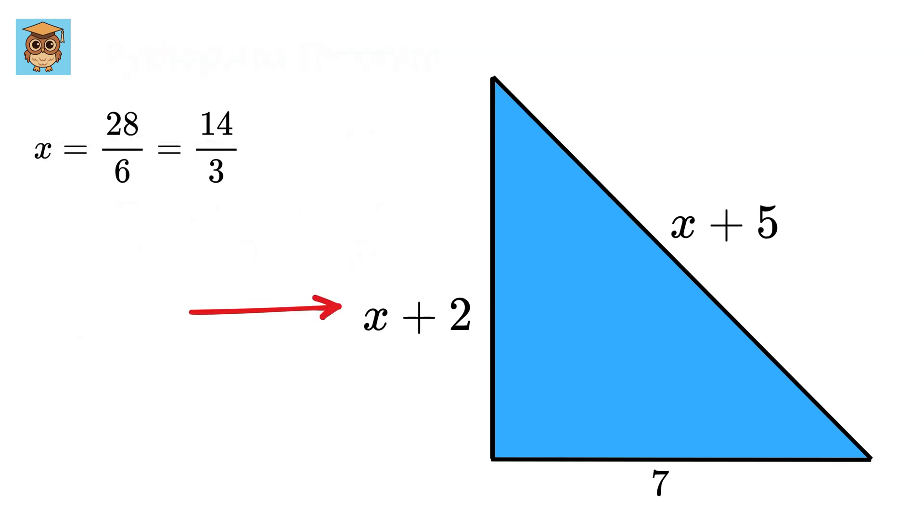So far, so good. Thus, this side length will be x + 2, or 14/3, plus this 2 can be written as 6/3. So it becomes 20/3.